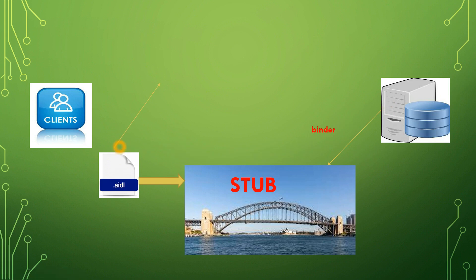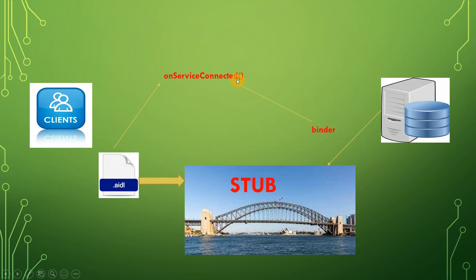AIDL will call the bindService method — the client calls bindService to connect to the binder. At that point, onServiceConnected will be called. Once the client calls onServiceConnected, the binder object will be returned to that method. This binder will have all the necessary information to give back to the client. The client requested some information and the server gives that information via the binder returned through onServiceConnected.